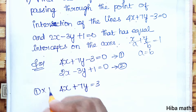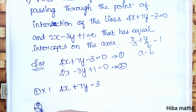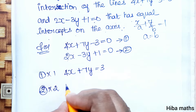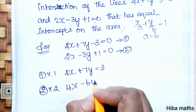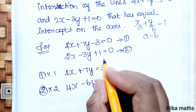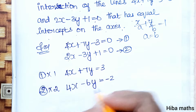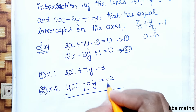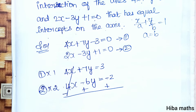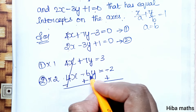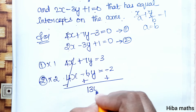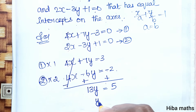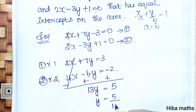Subtracting the modified equation 2 from equation 1, the x terms cancel. We get 7y + 6y = 3 + 2, so 13y = 5. Therefore, y is equal to 5 by 13.